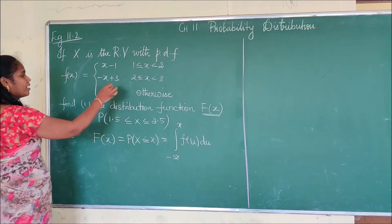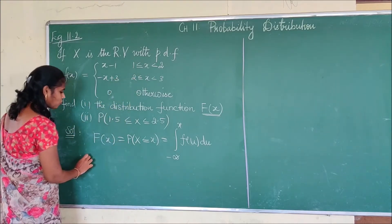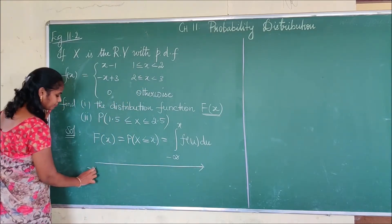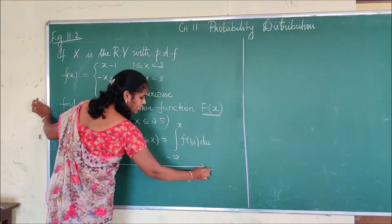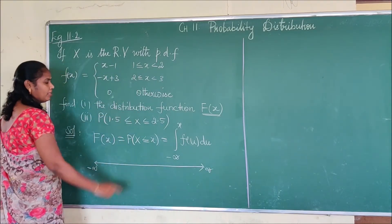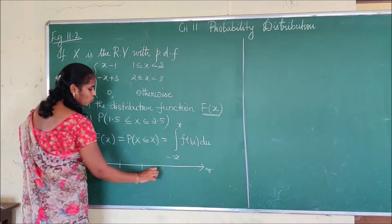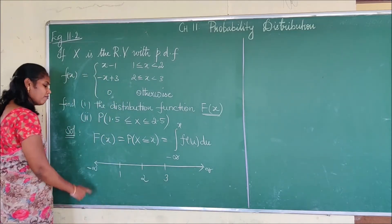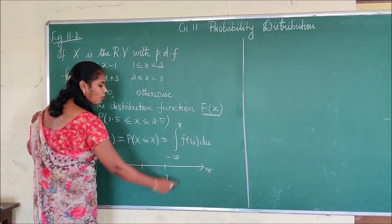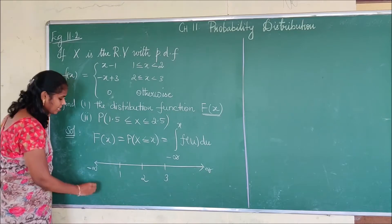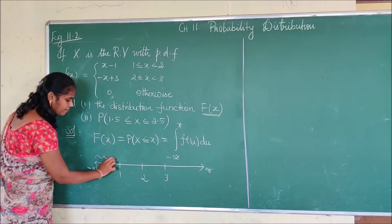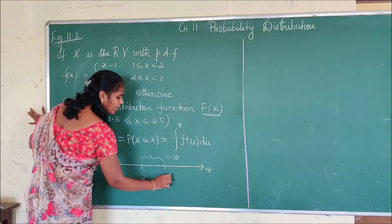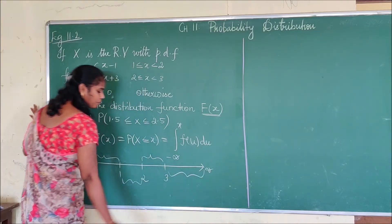My function is defined in 3 parts, so I am going to take the interval from minus infinity to plus infinity and mark the key points: 1, 2, and 3. This gives me 4 intervals: minus infinity to 1, 1 to 2, 2 to 3, and 3 to infinity.